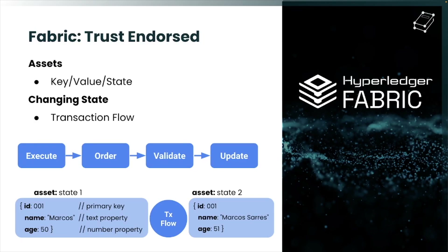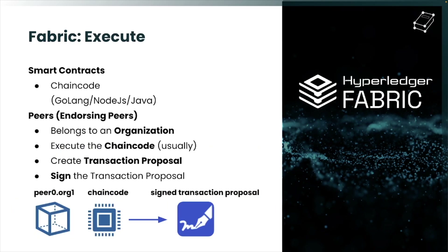The Hyperledger Fabric transaction flow is used to change, update, create, or delete assets or asset values inside a blockchain network, and it consists of four steps: execute the transaction inside the smart contracts, order the transaction inside the blocks, validate the blocks and transactions, and finally update all the states of the blockchain network. As shown in this example, an asset with three properties — id, name, and age — has its initial state updated with new property values after the transaction flow completes.